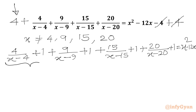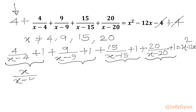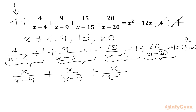Now we will take LCM. 4 plus (X−4) gives X over (X−4), plus 9 plus (X−9) gives X over (X−9), plus 15 plus (X−15) gives X over (X−15). Similarly, 20 plus (X−20) gives X over (X−20).